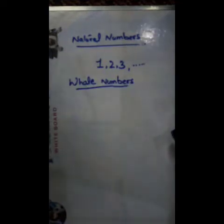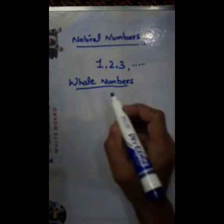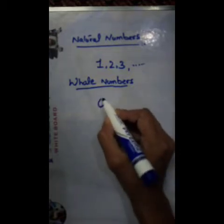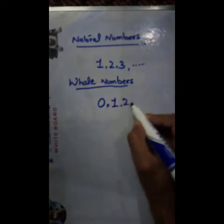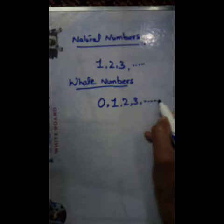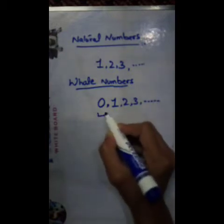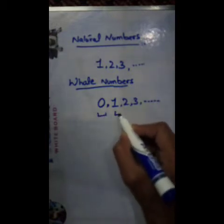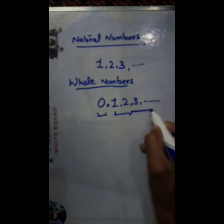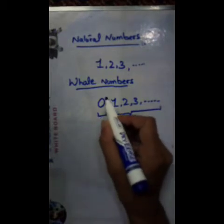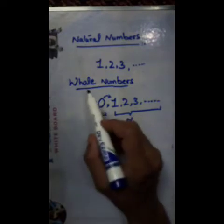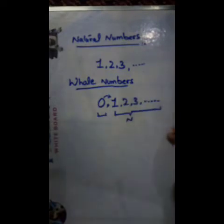Let's know about Whole Numbers. 0 included with Natural Numbers gives the Whole Numbers. If 0 is included in Natural Numbers 1, 2, 3 and so on, then it would become Whole Numbers. From 1, there are your counting numbers, and if we add 0 to these numbers, then it would become Whole Numbers.